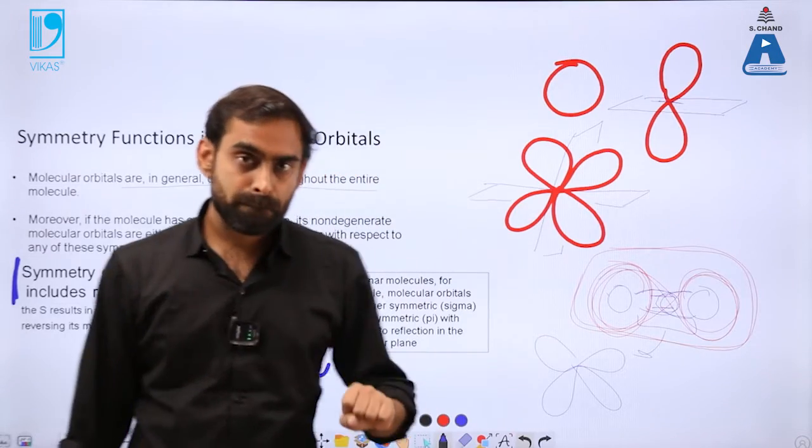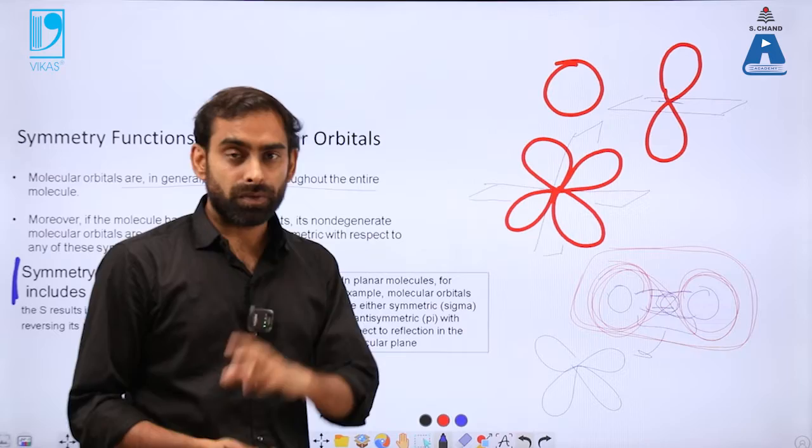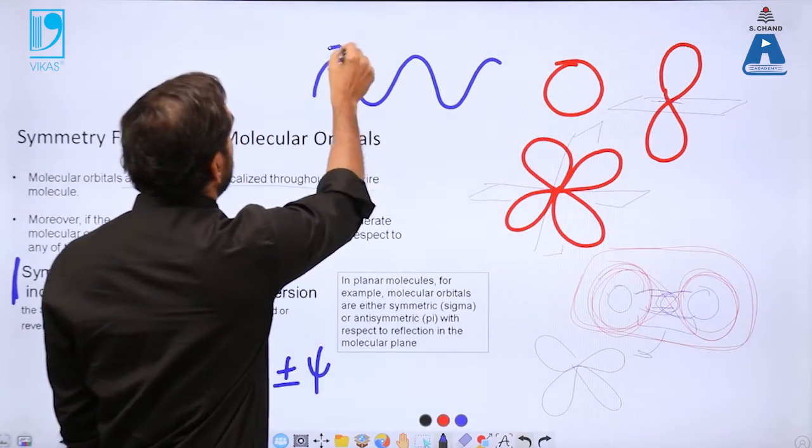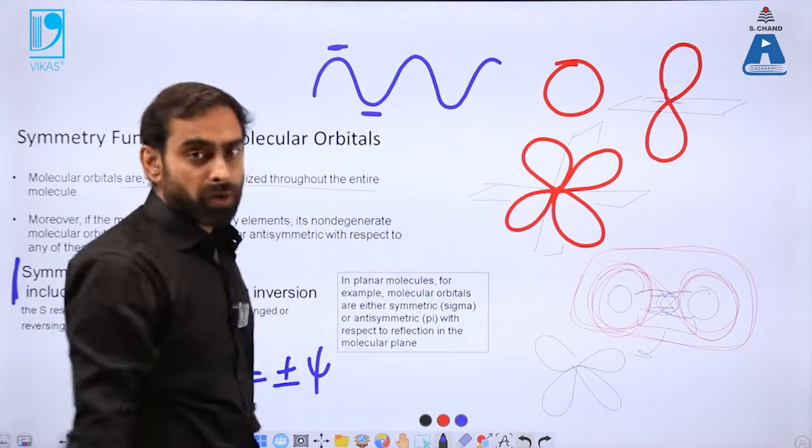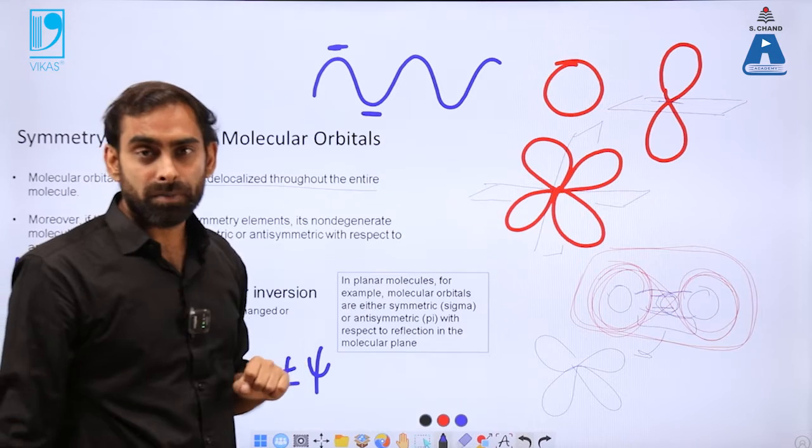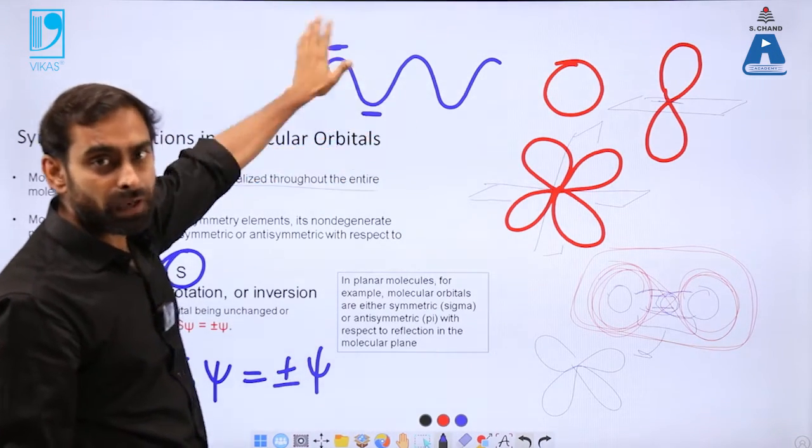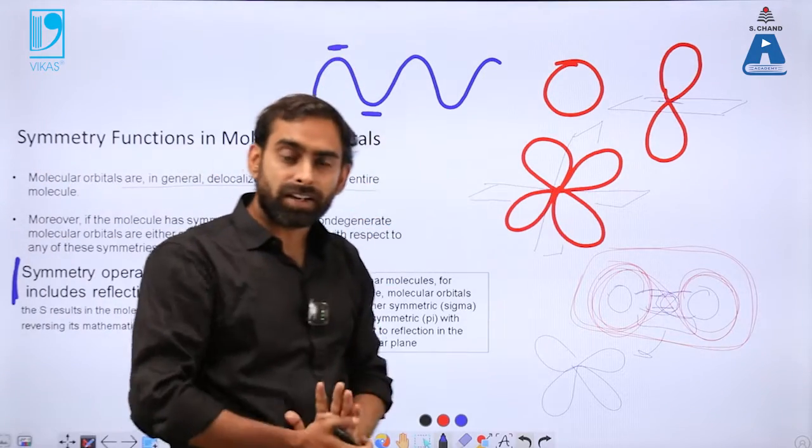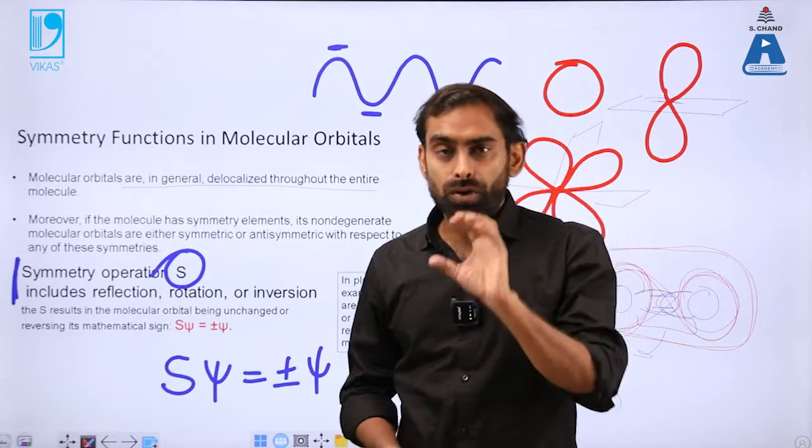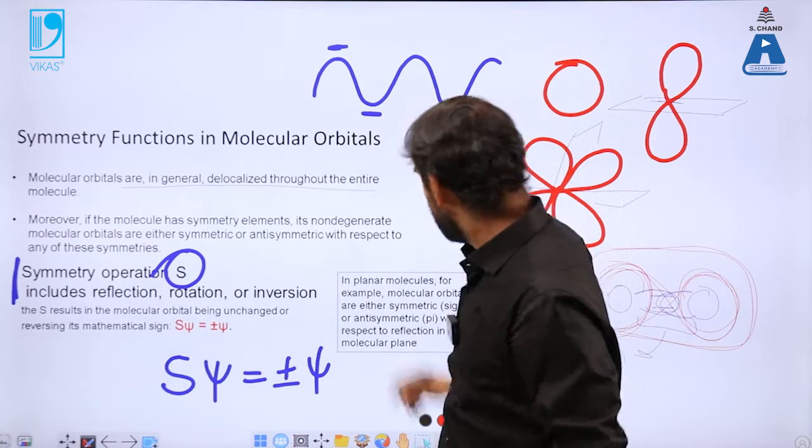Two waveforms can combine in two different ways, which we will talk about later in this video. Every waveform has a point called crest and a point called trough, the point of maximum amplitude and point of minimum amplitude. We can in general represent this as a plus and minus phase of a wave.